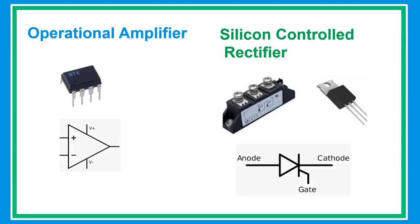An operational amplifier, or op-amp, is a voltage-amplifying device designed to be used with external feedback components such as resistors and capacitors between its output and input terminals.